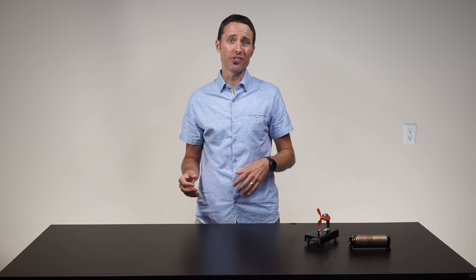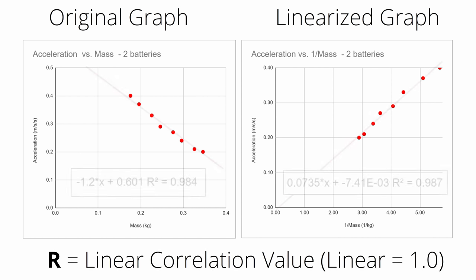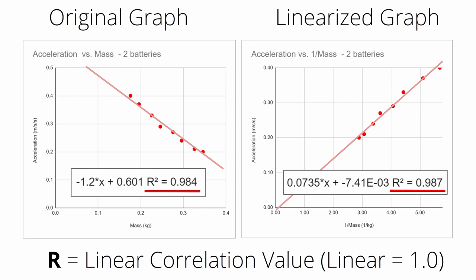If students first try to linearize their original graph by graphing acceleration versus the inverse of mass squared, they would get a side-opening parabola. Encourage students to continue trying different ways to linearize or re-express their graph until they get the straightest possible trend. Depending on the quality and range of data, it is sometimes difficult to determine which graph is most linear. Encourage students to use the linear correlation value or the r-squared value as an objective way to measure the amount of linear association between the graph variables. The final linearized graph will be the one where the absolute value of the correlation or the r-squared value is closest to one.